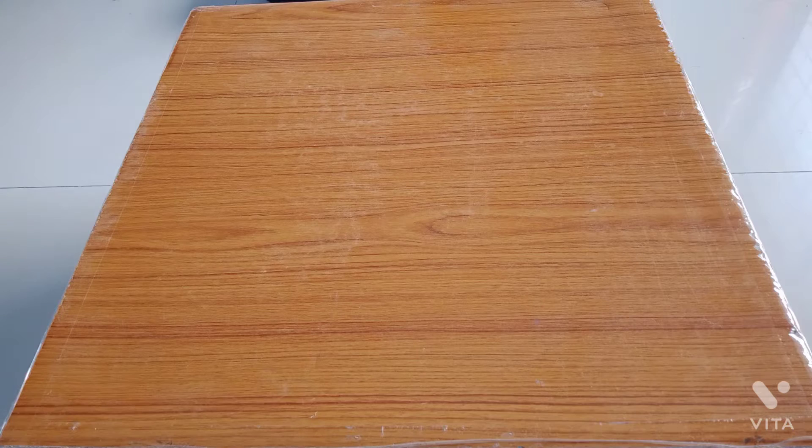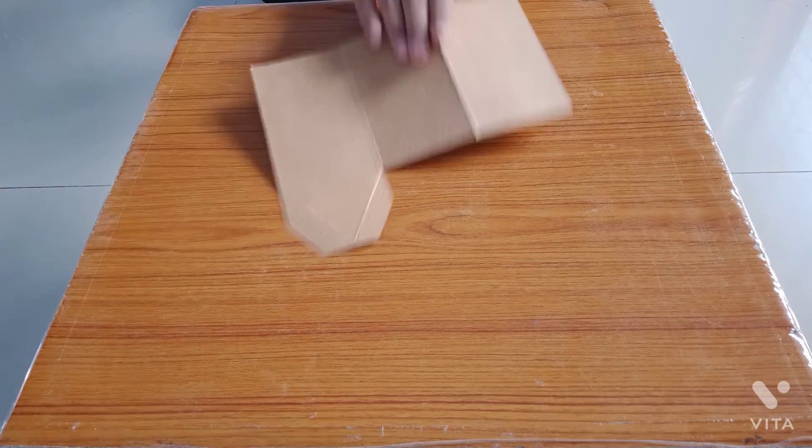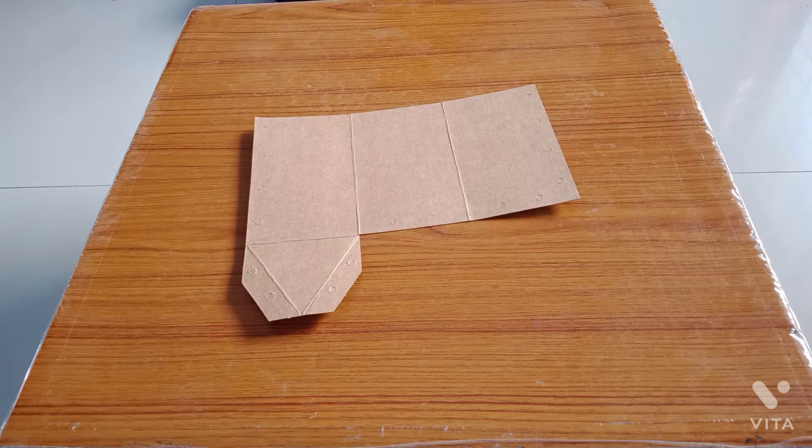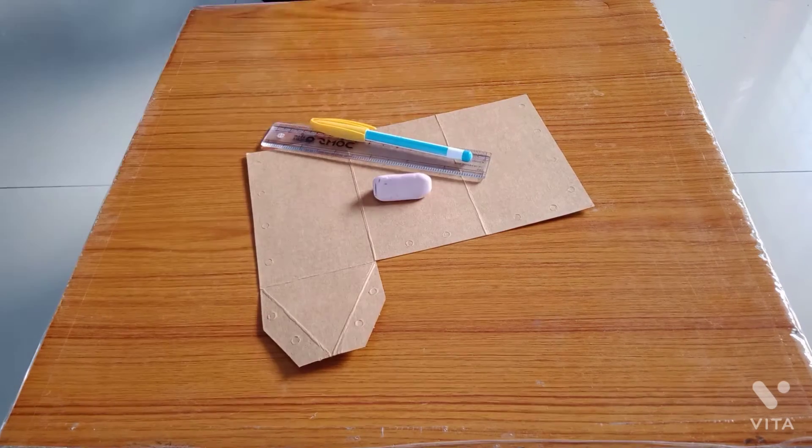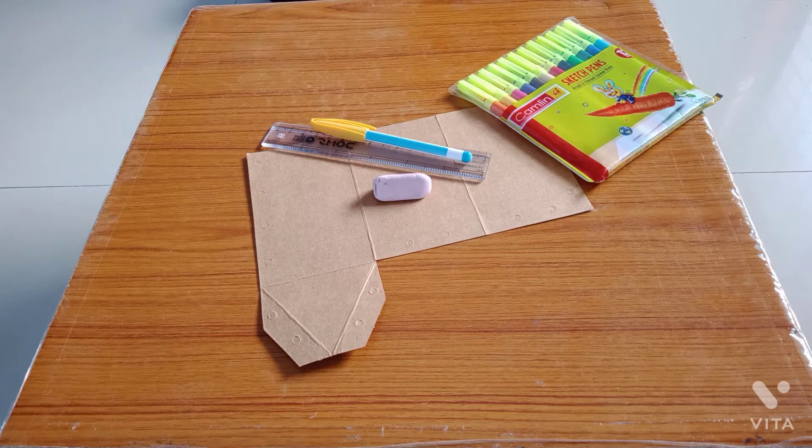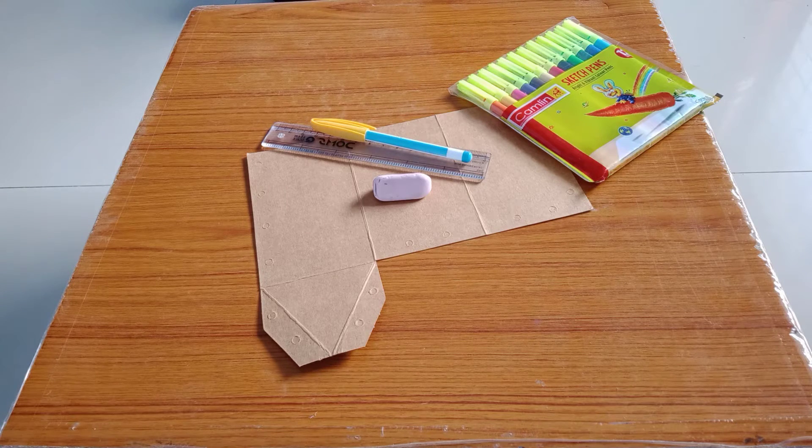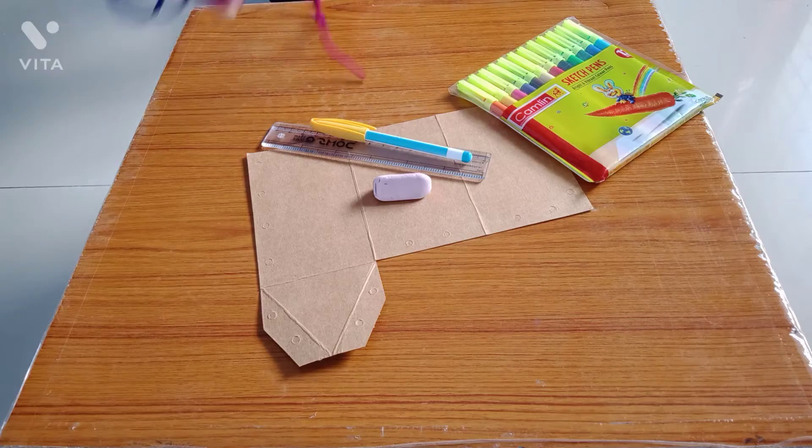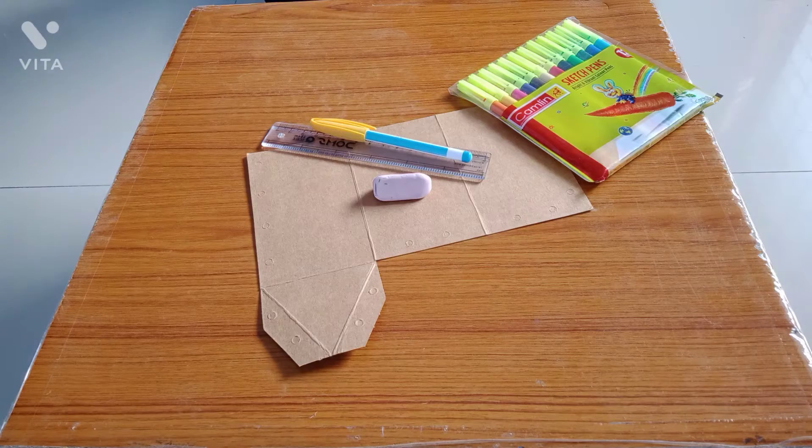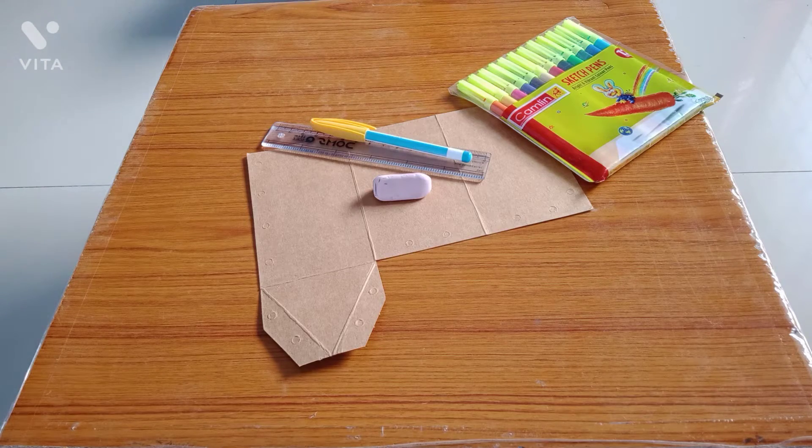For that, we need cardboard sheet. I've cut it into the shape—I'll tell you how to cut it afterwards. Then we need pencil, scale, eraser, and sketch pen to draw or make something on it, and some threads. I will choose a color afterwards. So let's go.